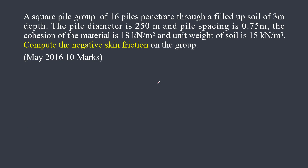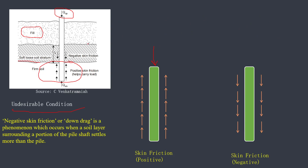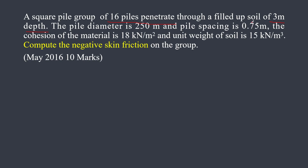Let me explain the given data. You have a pile group of 16 piles penetrating through a filled-up soil. The three meters refers to the depth of the compressible layer — the hatched layer shown in the image that will compress when the new additional fill load is applied.